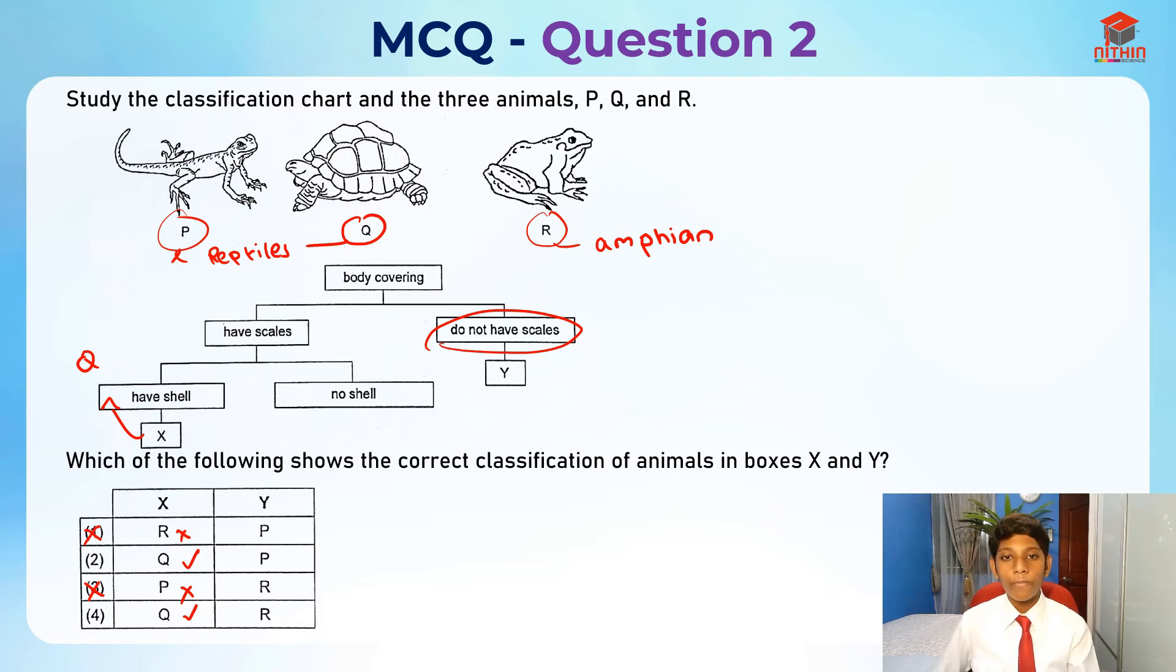Frog skin is actually really smooth and moisturized, so Y should actually be R, which is the frog. Number 2 is also wrong because it's P. So our last option here is 4 because X and Y are correctly matched. The answer for this question is 4.